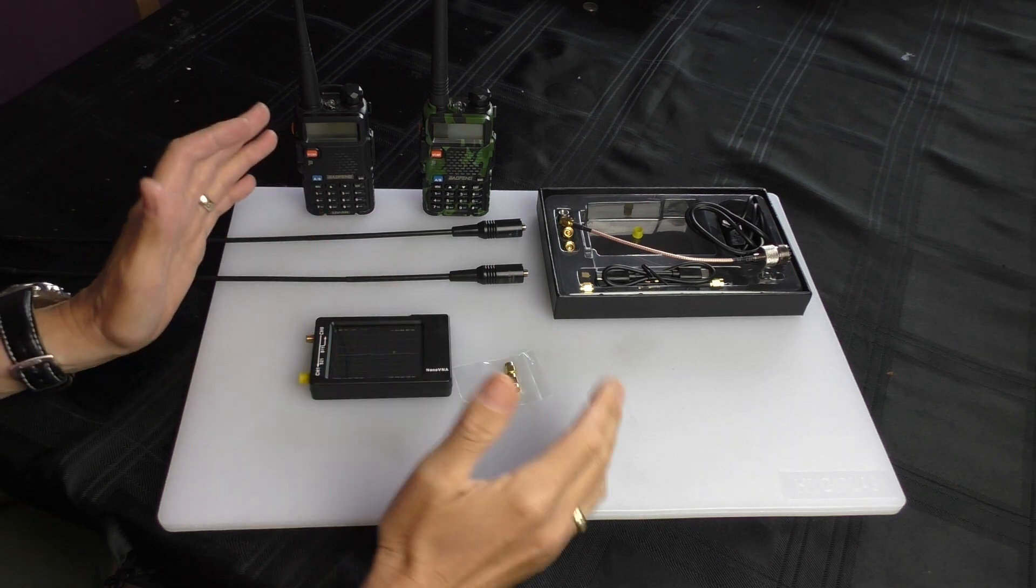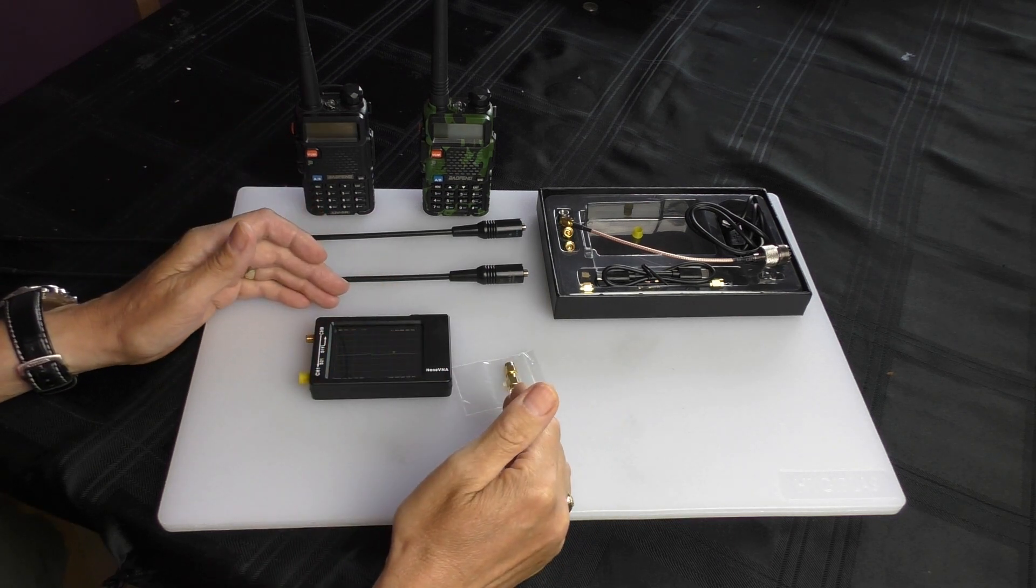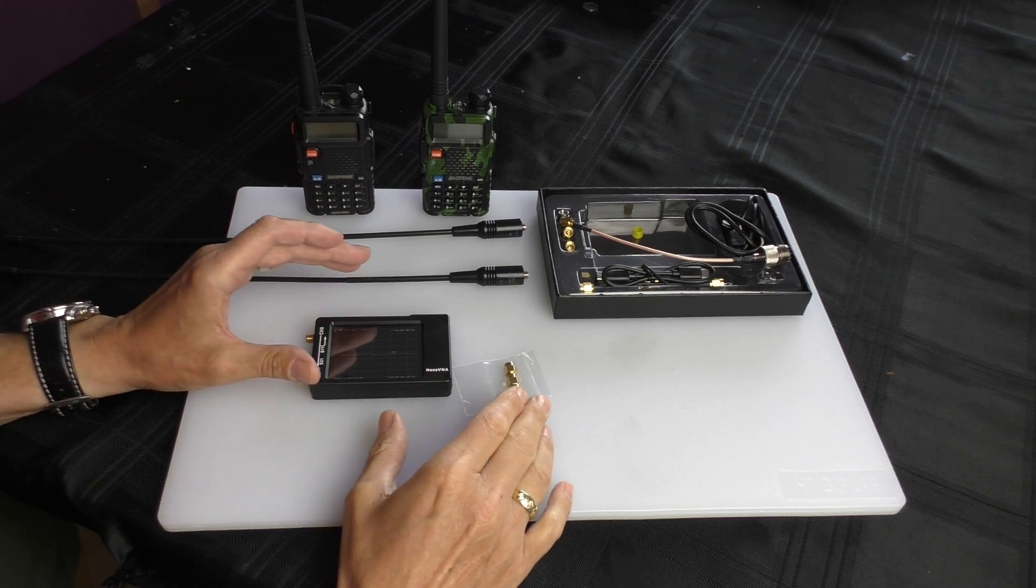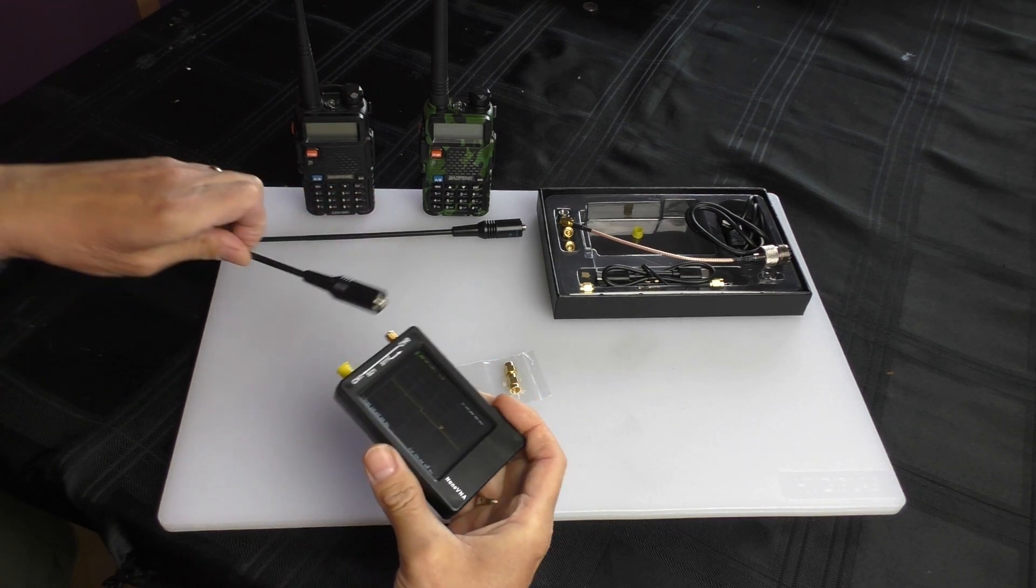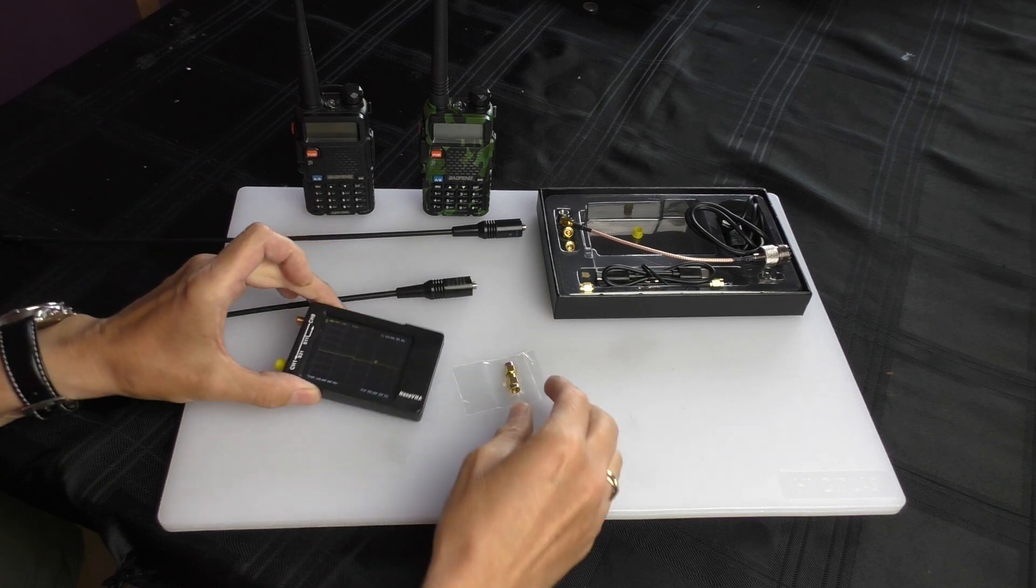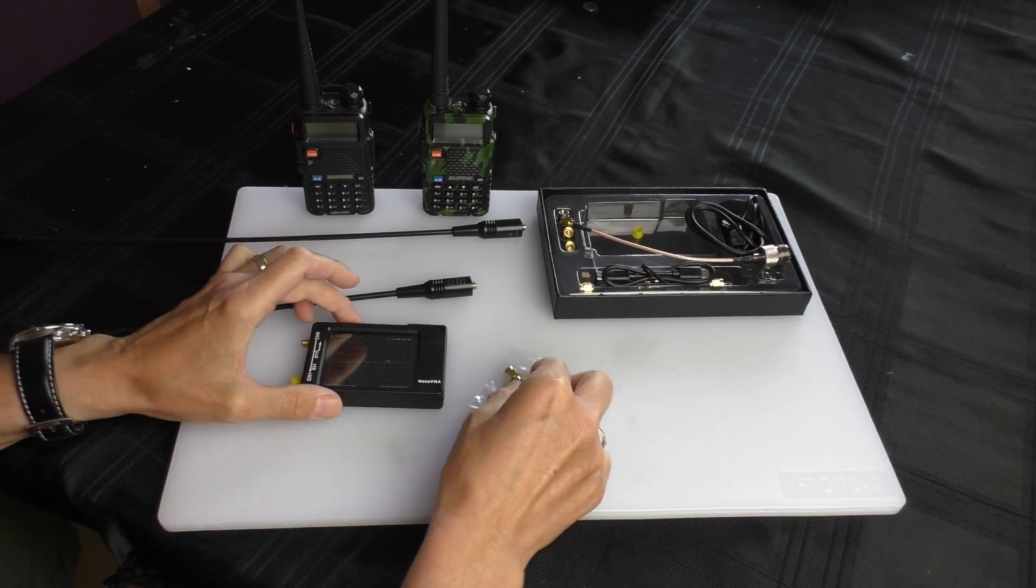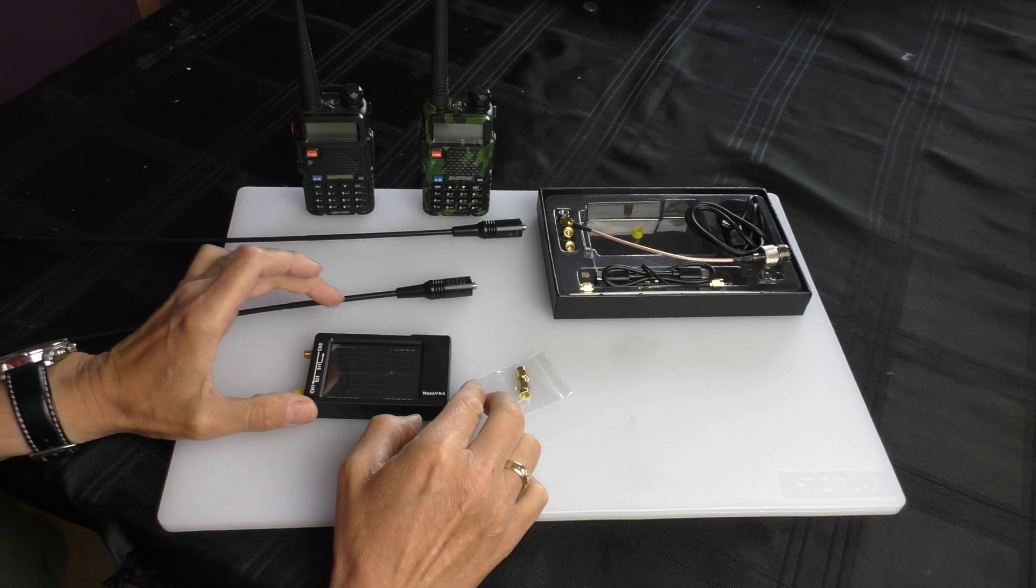You remember on the first video I used a little stand to test these antennas and a little patch lead. People came back and said that's not the right way to test it. What you need to do is attach the antennas straight onto the meter. So I've gone out and bought a little adapter coupler, and that's what we're going to be doing on this video.